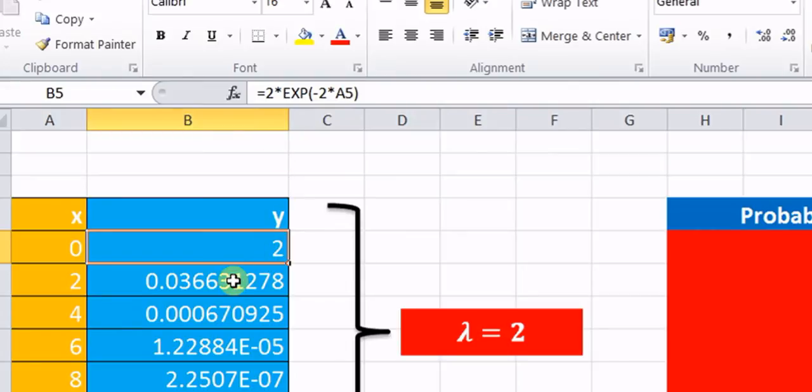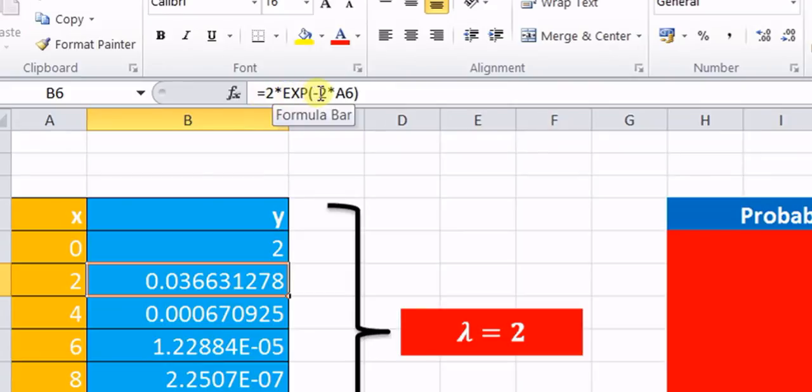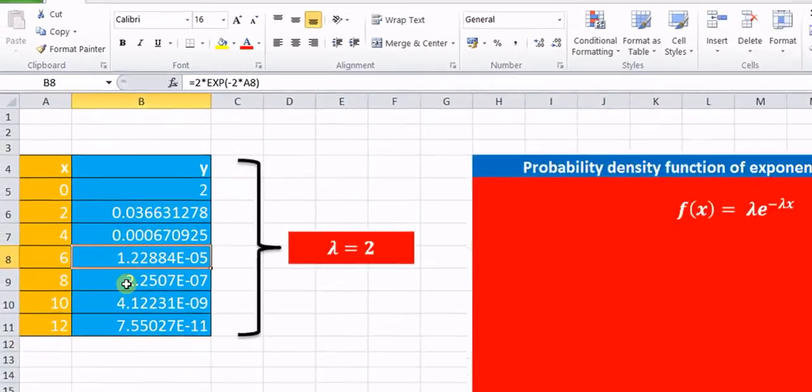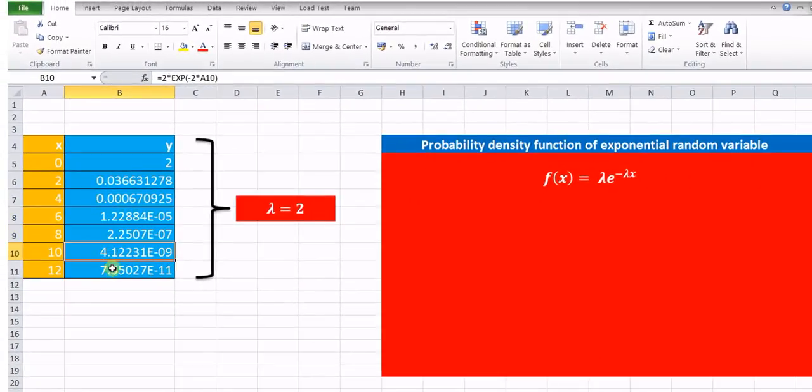Similarly, here also it is lambda e raised to minus lambda x where lambda is 2 and x is nothing but the value is 2. But that is corresponding to cell a6. Similarly, we have substituted the values for all these particular cells.